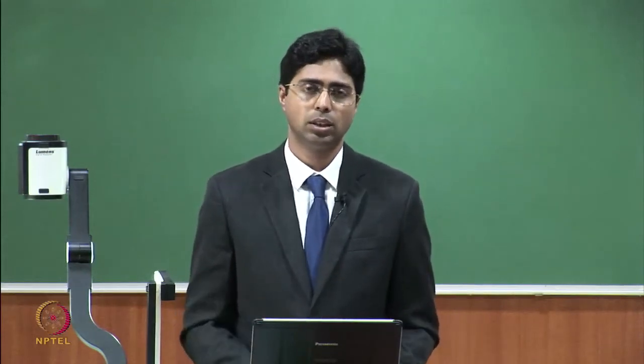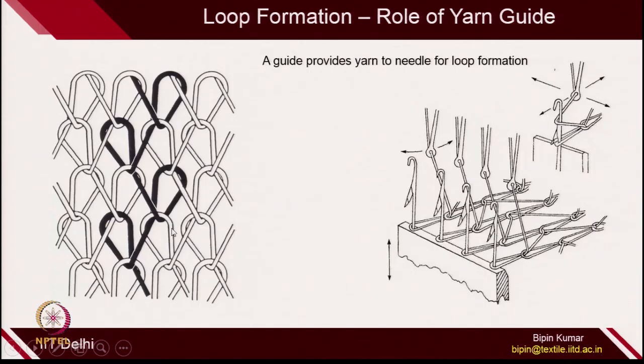More depth on the machine and fabric will be covered in subsequent lectures. At this moment, just try to understand the structural difference between weft and warp knitted structures. If you try to extend the fabrics, because of the geometry of the loop, the warp knitted structure will be very rigid and not very extensible — because both legs of the loop are on the same side, the loops cannot open up. In terms of fabric properties, these two structures are very different.